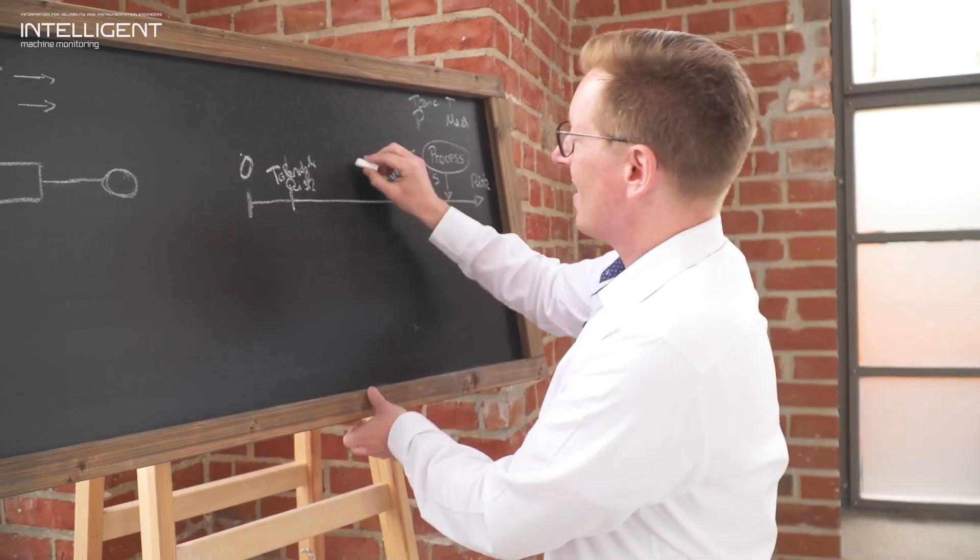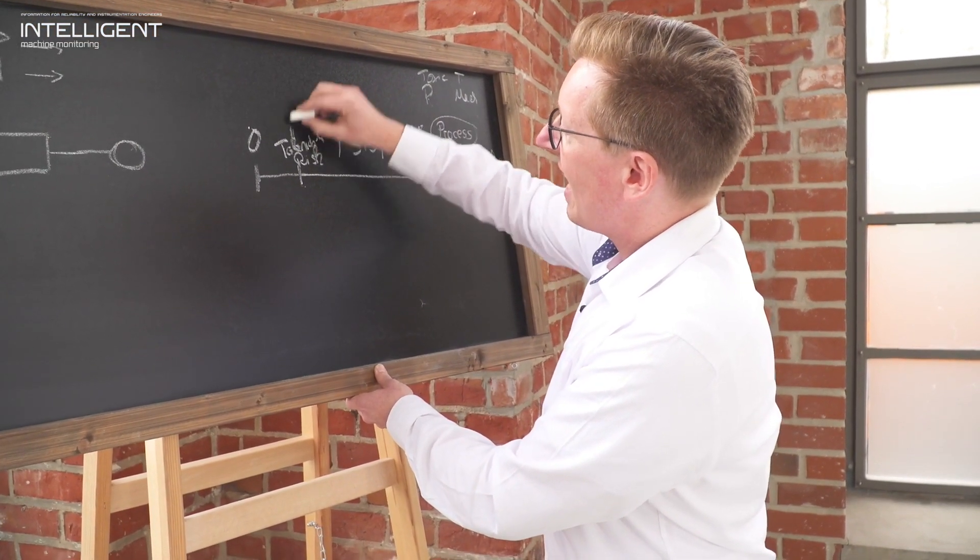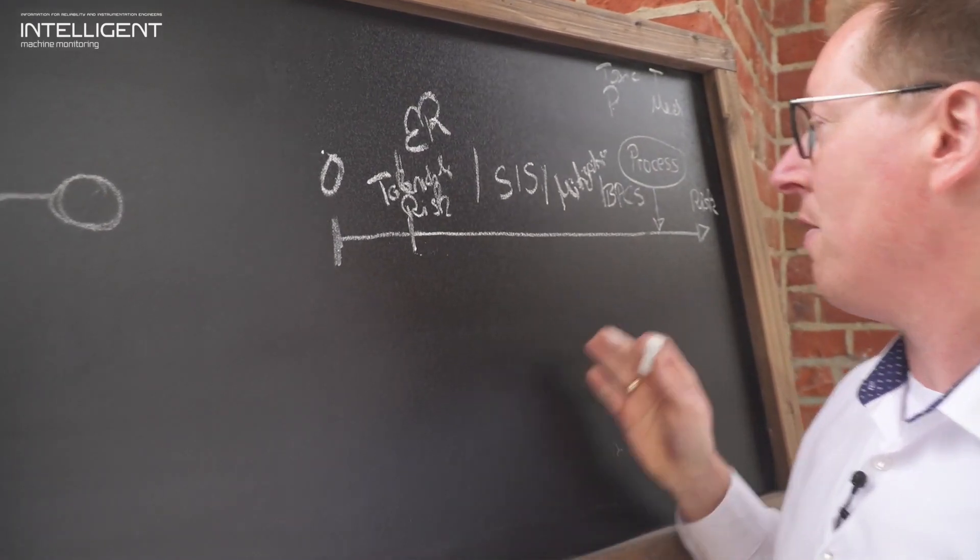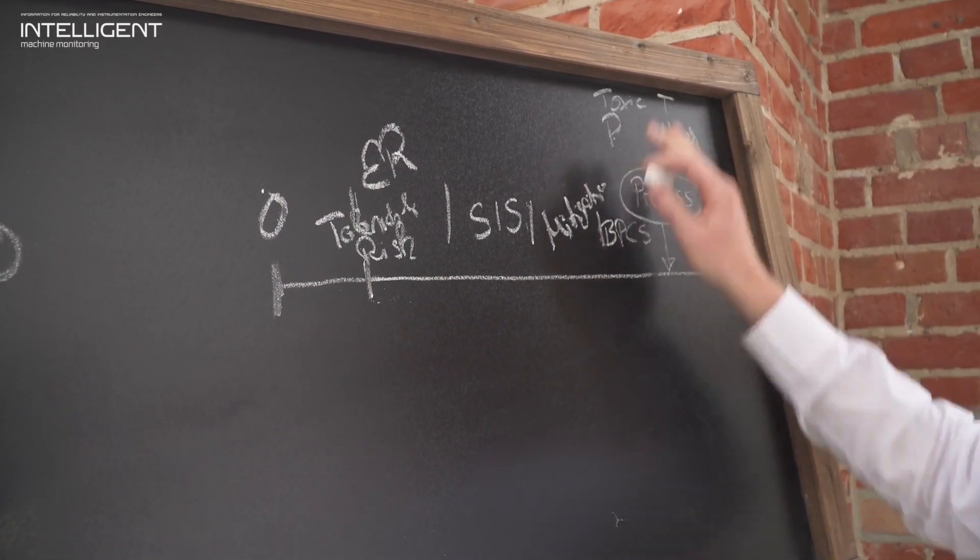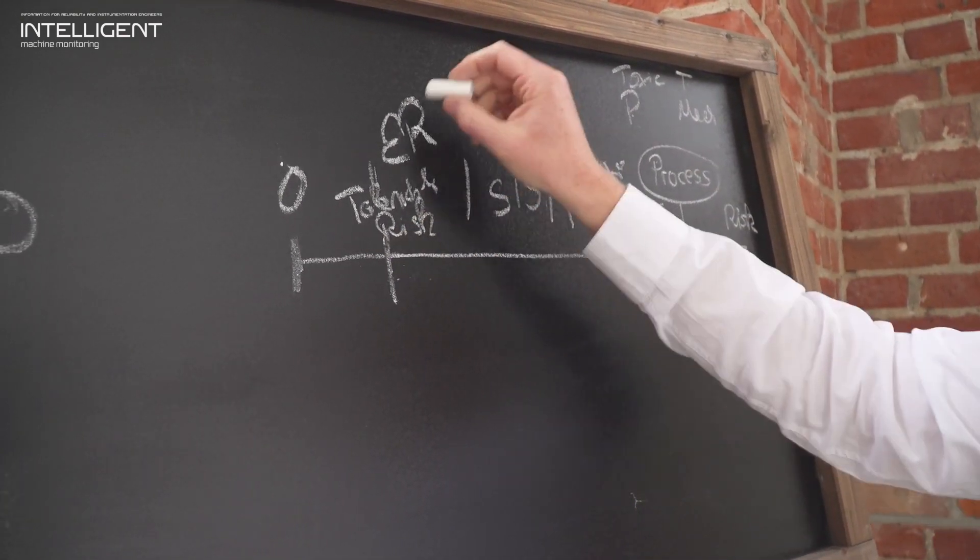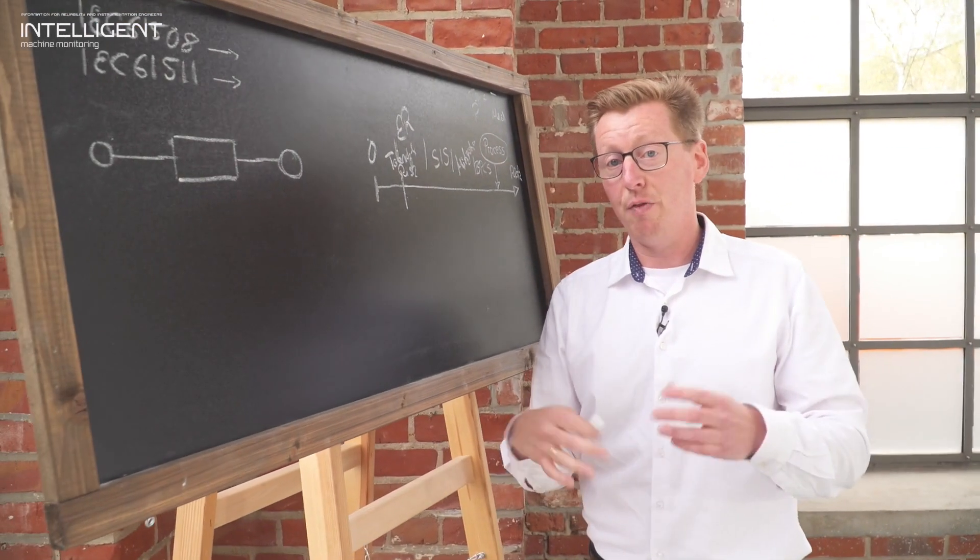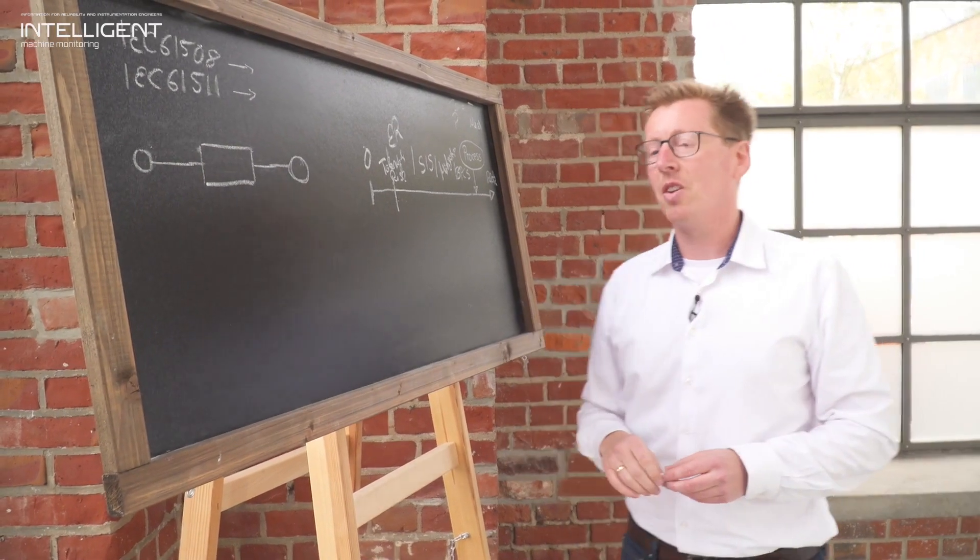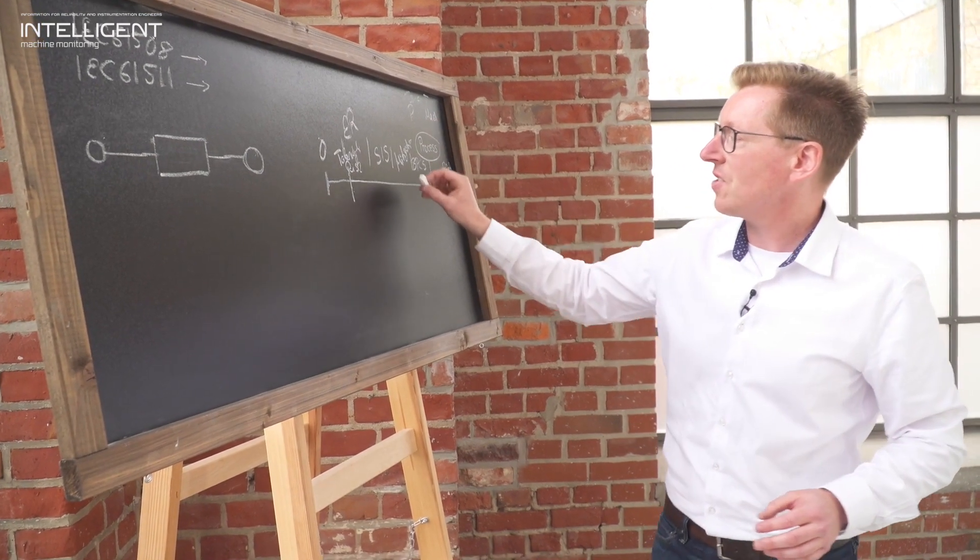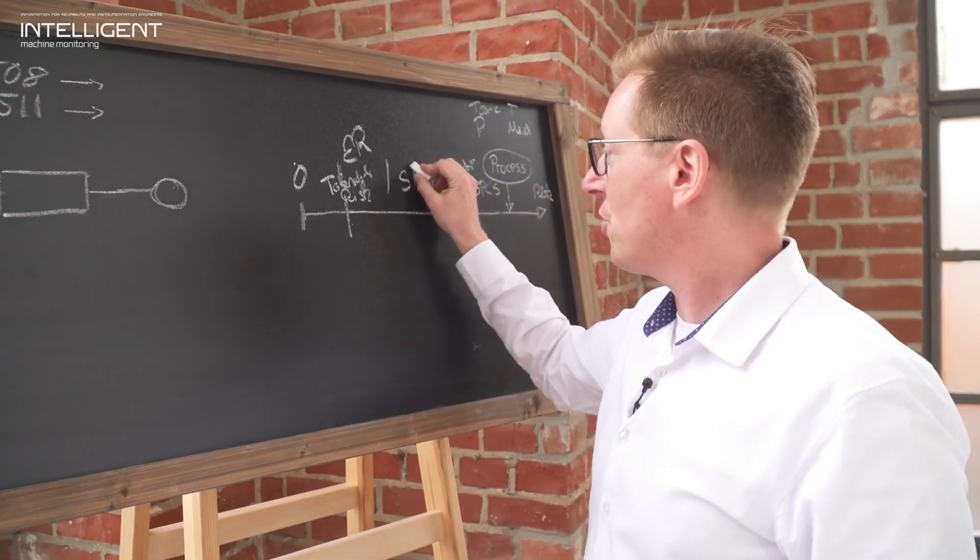A third level is a safety instrumented system, what we'll be discussing today. And a last response is an emergency response method. If the whole process gets out of control, all the other measures have failed to control the process to the tolerable risk, there is something in place for a unit evacuation or on a larger perspective a village or community evacuation depending on the nature of your risk and process you're running. Today we'll be focusing on the typical applications of a safety instrumented system, an SIS.